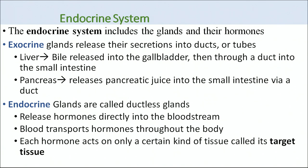Endocrine glands are called ductless glands. They release their hormones or secretions directly into the bloodstream, and blood transports these hormones throughout the body. Each hormone acts on a certain kind of tissue called the target tissue, reaching it directly from the bloodstream.